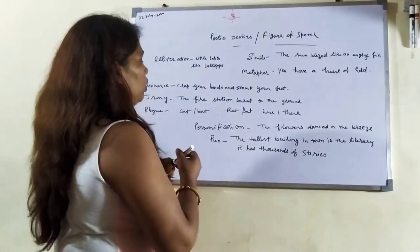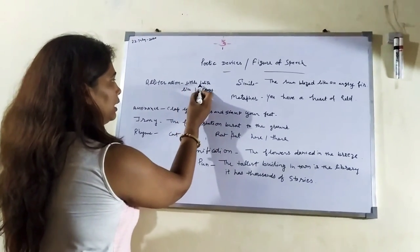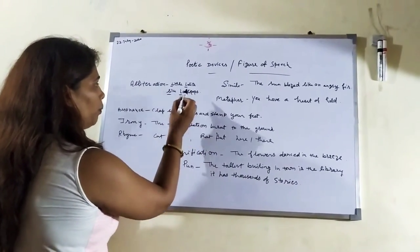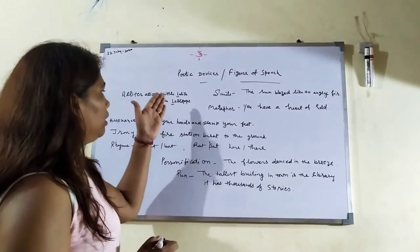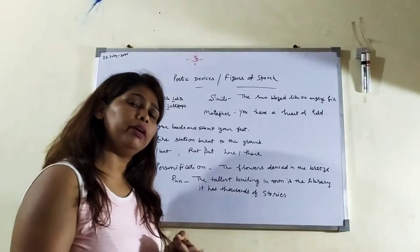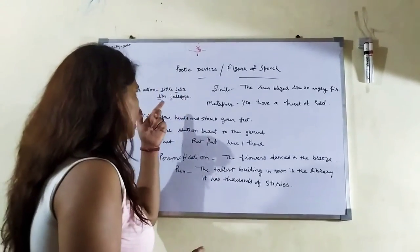Little Lalita like lollipop. Little L, Lalita L, like L, lollipop. Again L. You are able to know that one alphabet, L, is repeated. So the same alphabet is repeated. That is alliteration.